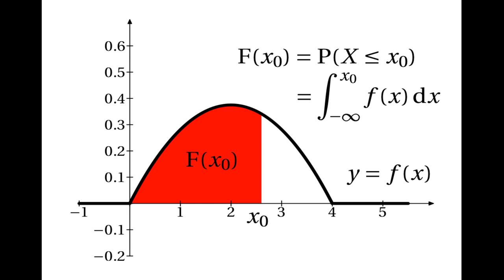The cumulative distribution function is a function whose output is equal to the probability that x is less than or equal to the input. That's the area underneath the graph of a probability density function up to and including x0, which equals the integral of the probability density function as far as the limit x0.